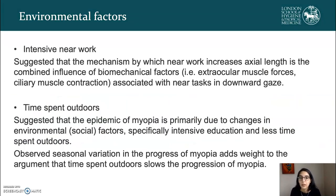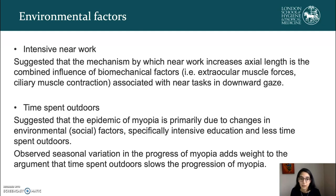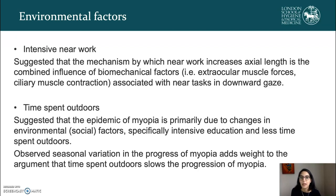The projected increase in myopia and high myopia is widely considered to be driven by environmental factors — principally, lifestyle changes resulting from decreased time outdoors and increased near work. High-pressure educational systems at a very young age, especially in Singapore, Korea, Taiwan, and China, may be a causative lifestyle change, as may the excess use of near electronic devices. Other proposed causes include light levels, which may directly relate to time outdoors, peripheral hyperopia in the myopic eye encouraging axial growth, and diet. There is also observed seasonal variation in myopia progression, adding weight to the argument that time spent outdoors slows progression.